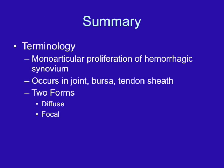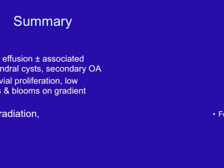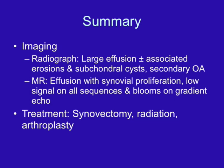In summary, PVNS is a monoarticular proliferation of hemorrhagic synovium occurring in the joint, bursa, or tendon sheath. There are two forms: a diffuse form typically involving the large joints, and a focal or localized form involving the small joints of the hands and feet. On plain film, you may see a large joint effusion with associated erosions and subchondral cysts, and if occurring late, significant secondary osteoarthritis as seen with our patient. On MRI, you may see an effusion with synovial proliferation showing low signal on all sequences and blooming on gradient echo due to hemosiderin. Treatment is synovectomy, with radiation for recurrence, and arthroplasty for refractory cases or significant secondary arthritic change.